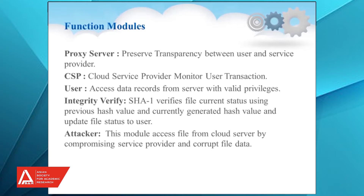Next is the user module — the user, along with valid login privileges, will be the one accessing all data records with authentication. The next one is integrity verify, which uses the SHA-1 algorithm to verify the current status of a file. If the file is corrupted, you get a message saying the file is corrupted; if not, you get a message saying the file is safe. The last module is the attacker — even compromising the service provider, some external means may corrupt the data using the file name and the secret key.